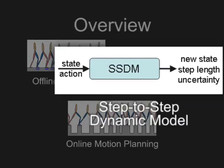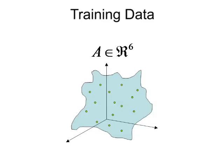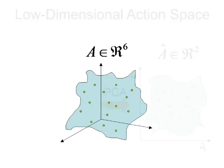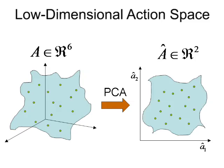For the step-to-step dynamic model, we begin by computing a low-dimensional representation of the actions that are associated with the training data using principal component analysis.